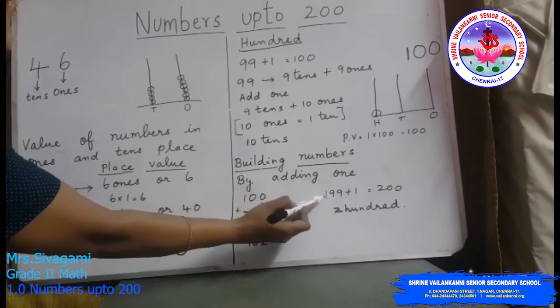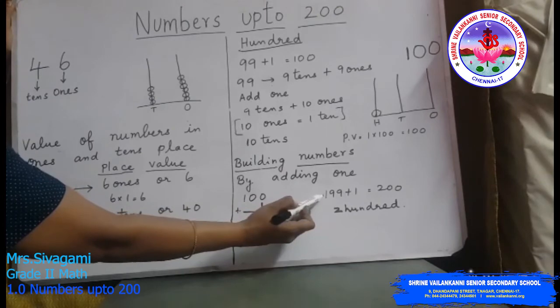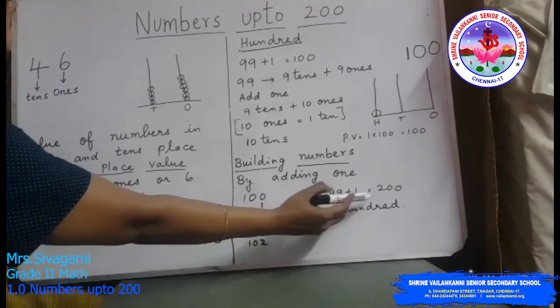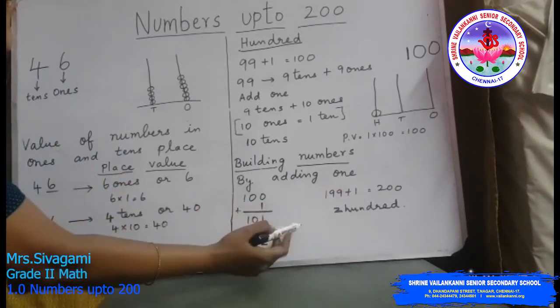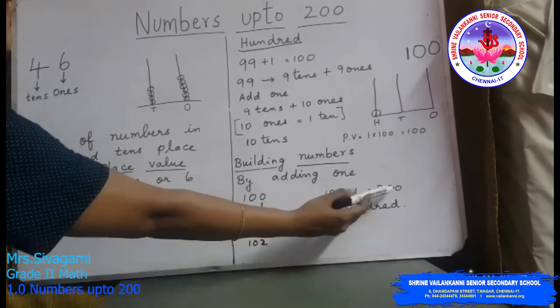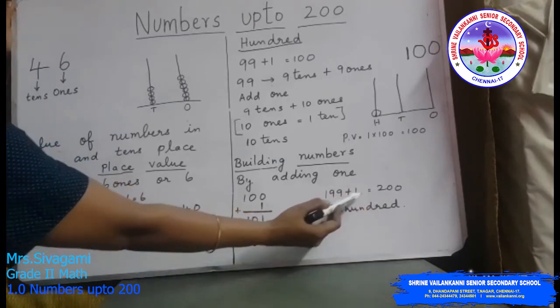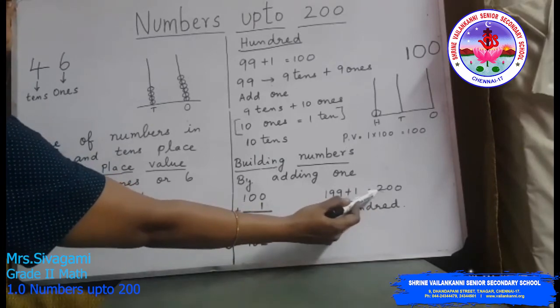And at last, 199 plus 1 gives you 200. 200 has no ones, no tens — only 2 hundreds.